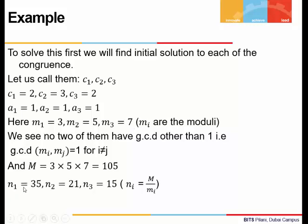Let's define n₁, n₂, n₃. They are found by dividing the capital M by each mᵢ. If we divide 105 by 3, we will get 35. When we divide 105 by 5, we will get 21. And when we divide 105 by 7, we get 15.